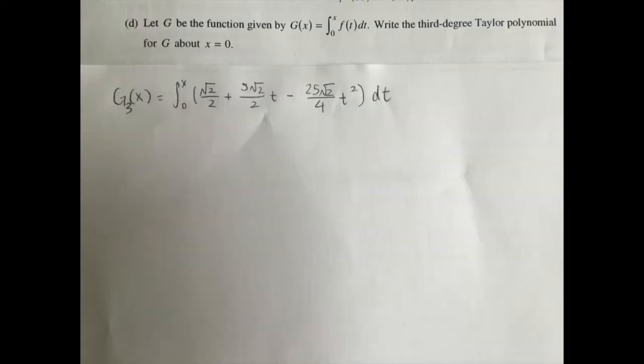We can start off by plugging in f of t. We have already gotten part of f of t in part A when we found p of x. But this time, instead of getting the third degree polynomial, which would be p of x, we need to get the second degree Taylor polynomial. Because when you integrate, the power of your variable will increase by 1.